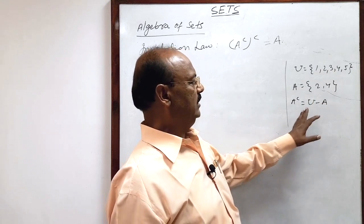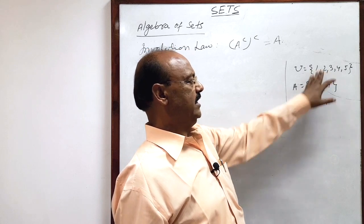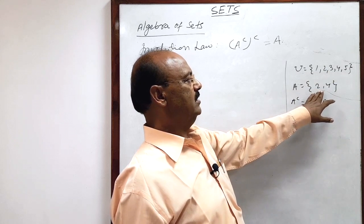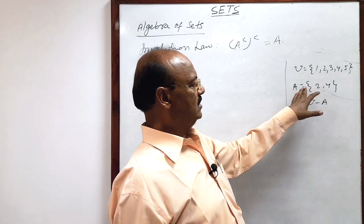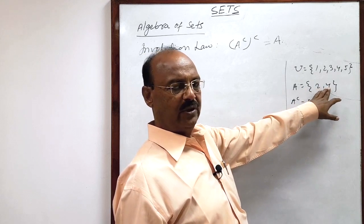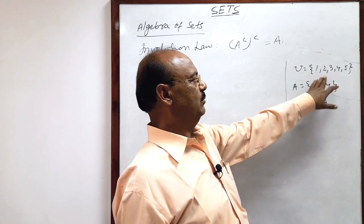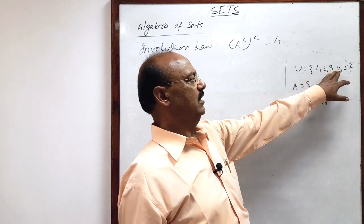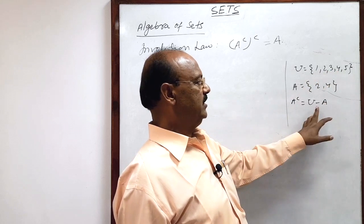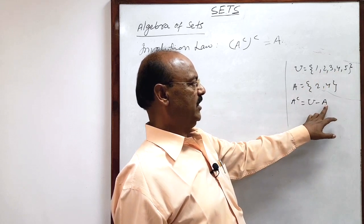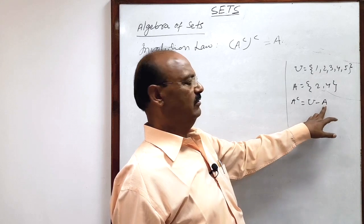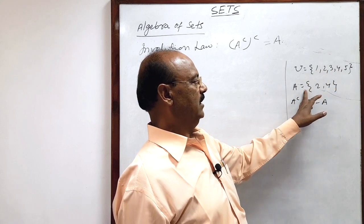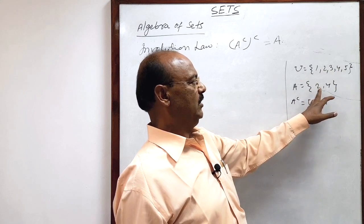That means only those elements of the universal set which are not available in set A. In set A, 2 and 4 are available. So the numbers not available in set A are 1, 3, and 5, obtained by subtracting set A from the universal set. Universal set: {1, 2, 3, 4, 5} and set A: {2, 4}.